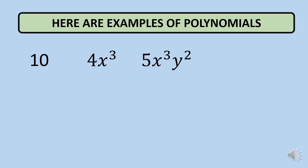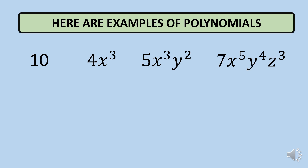Next, we have 5x raised to 3, y squared. As you can see, a variable y squared has been added, but this is still a product of a constant and variables raised to whole number exponents. Take note that the exponents should be a whole number and positive. Next, you have 7x raised to 5, y raised to 4, and z raised to 3. This expression is still a polynomial — we have positive exponents and all exponents are whole numbers.